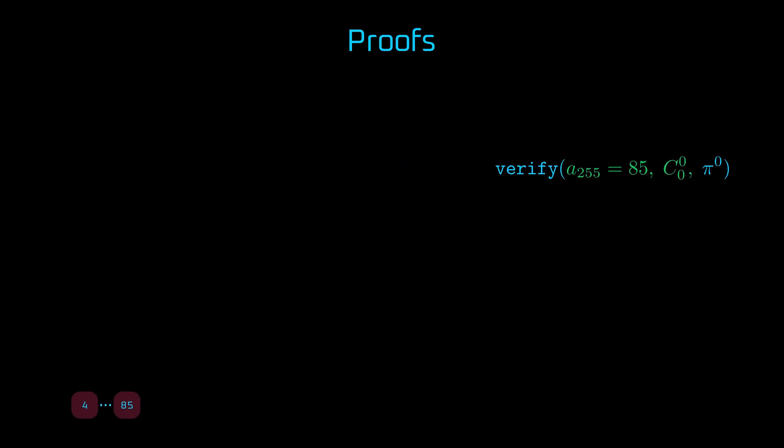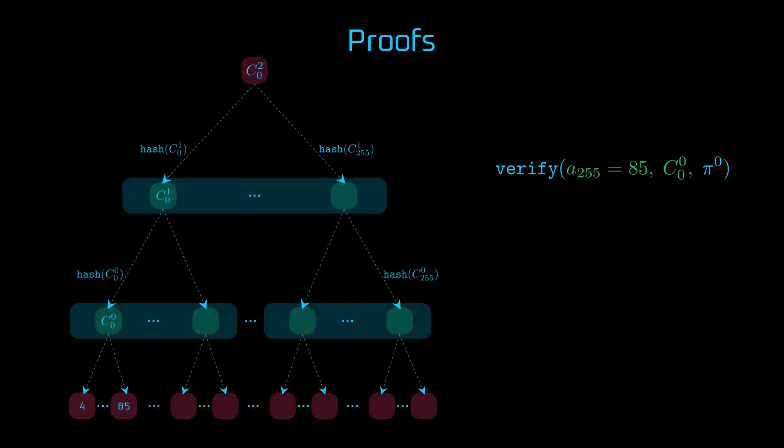Now, what if 85 belong to a multi-level tree? First, to prove that 85 belongs to C00, we need that commitment, opening, and PI0. On the next level, we want to prove that that commitment belongs to a parent commitment. So again, we need a parent, opening, which is the hash of the original commitment, and additionally, another proof, PI1.